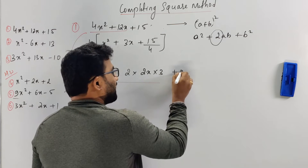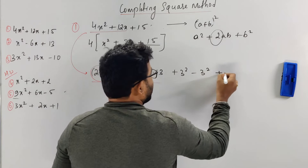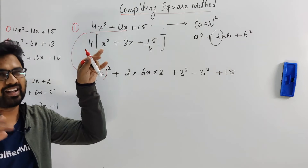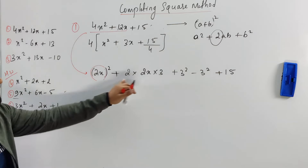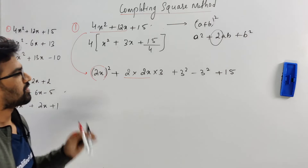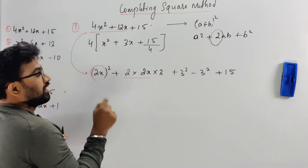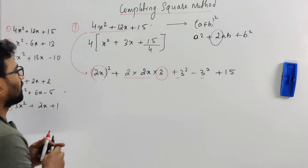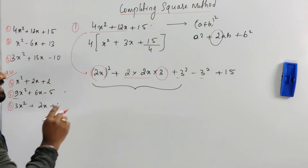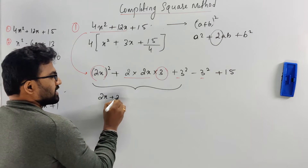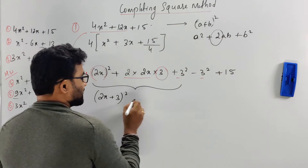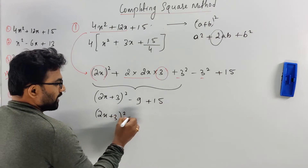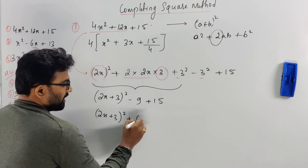What you're doing is: add and remove. Whatever the 15 is, write it as it is, then change the middle term. This is possible when you have 4x squared, 9x squared, or 16x squared. So the missing term: you're adding 2 into 2x into 3. What I'm doing is multiplying by the number and then adding and removing, so that completely this becomes (2x + 3) whole squared. Then minus 9 plus 15, the answer is (2x + 3) whole squared plus 6.